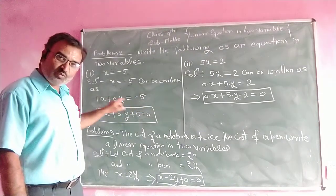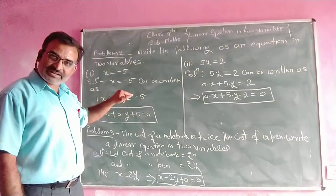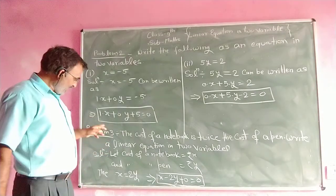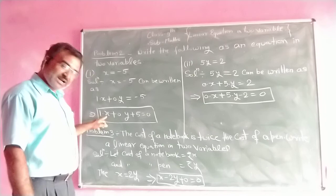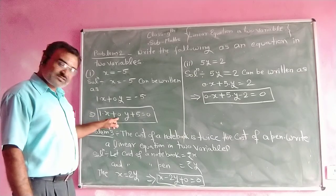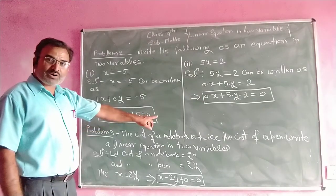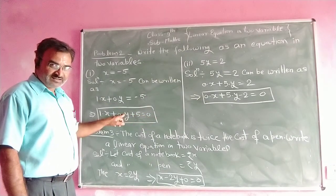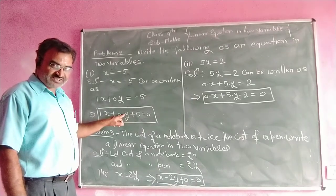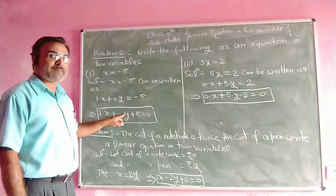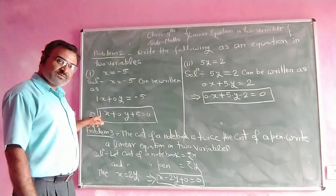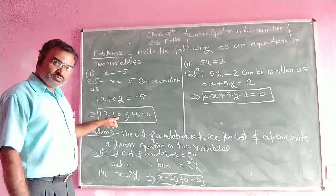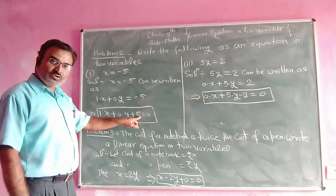This gives us the x term, y term, and constant. Transposing the constant term to the left side, we have: 1 multiplied by x plus 0 multiplied by y plus 5 equals 0. Comparing this with the standard form of a linear equation in two variables, we have a equal to 1, b equal to 0, and c equal to 5.